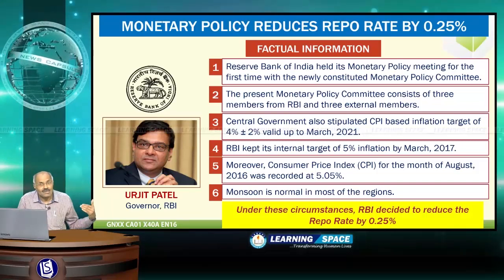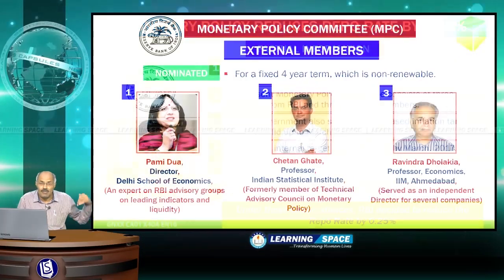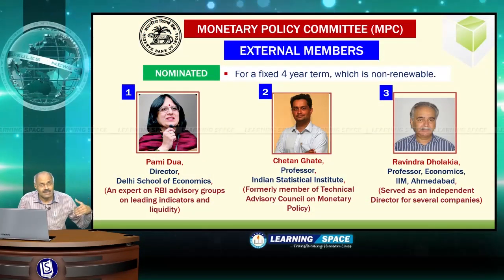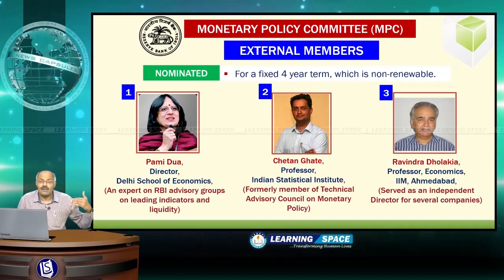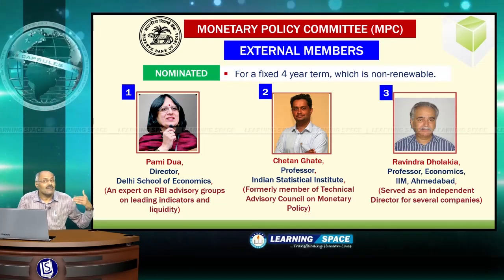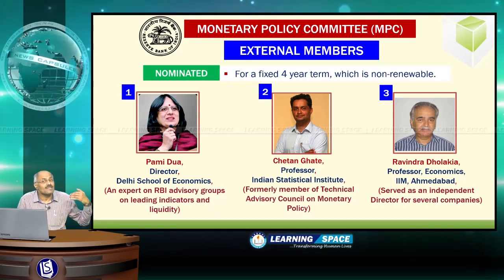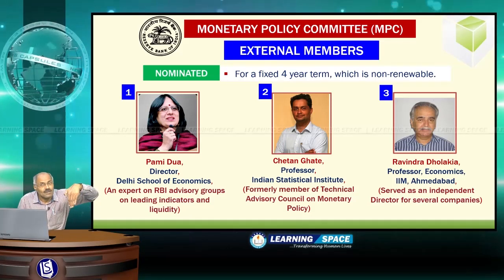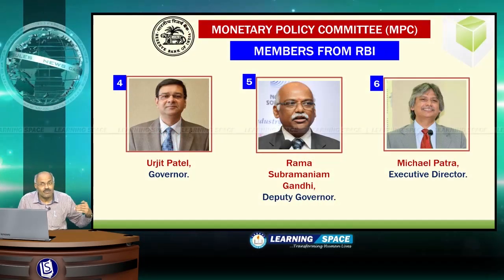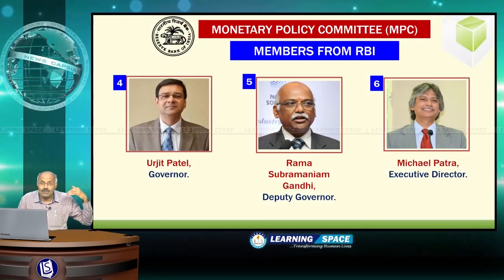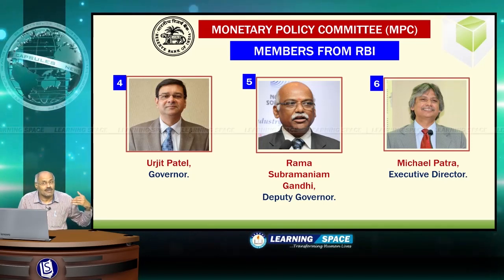As we have already learnt, the monetary policy committee has got 6 members — 3 external members. Please look at this slide. The 3 external members are Pamid Yuva, Chetan Ghatay, and Ravindra Dholakia, and these 3 members were nominated by the central government for a fixed 4-year term. The 3 internal members are the Governor of RBI, Deputy Governor Rama Subramaniam Gandhi, and Executive Director Michael Patra.